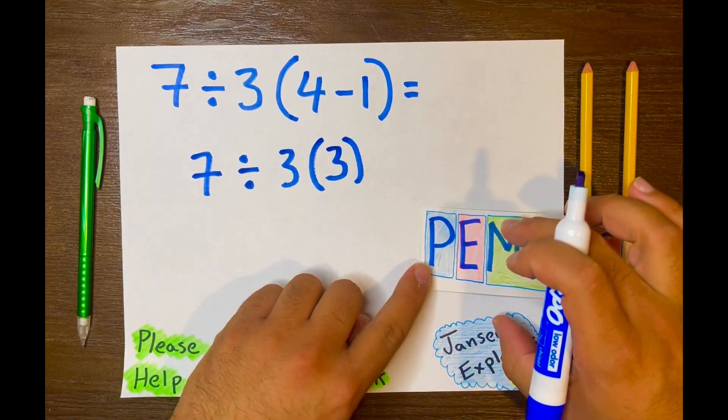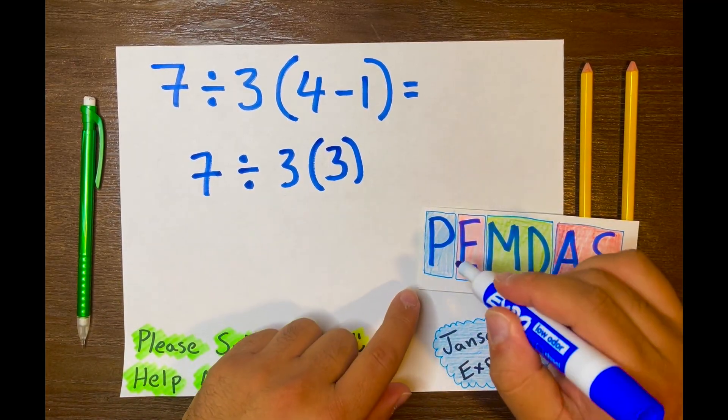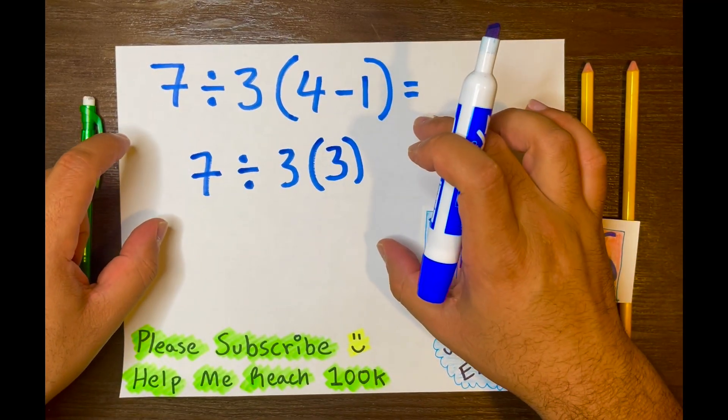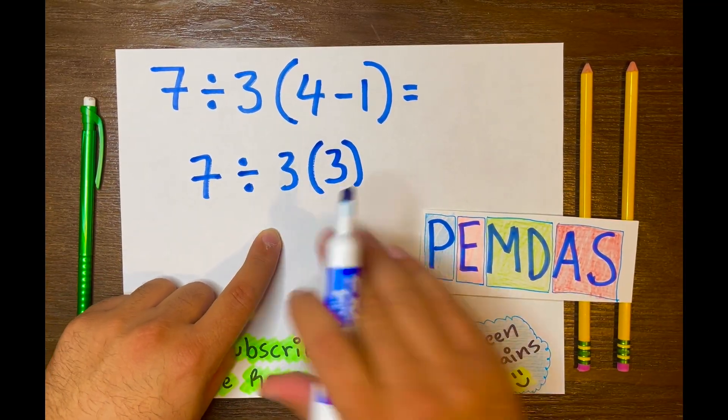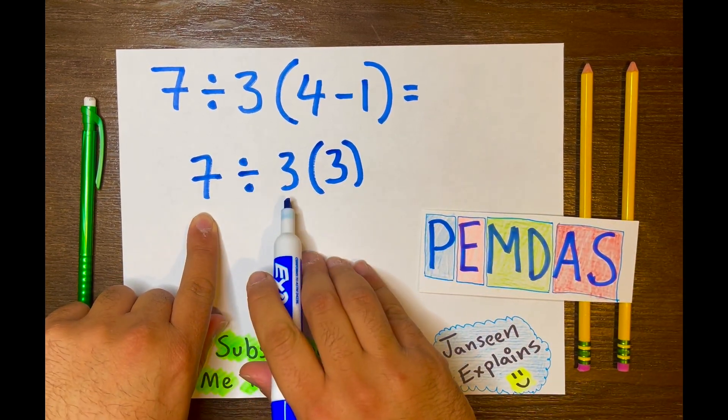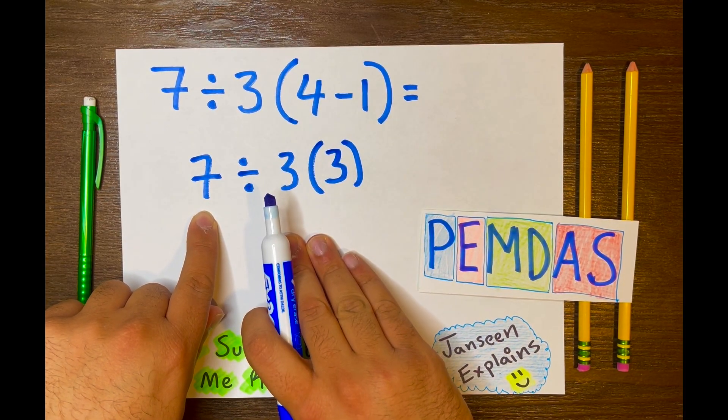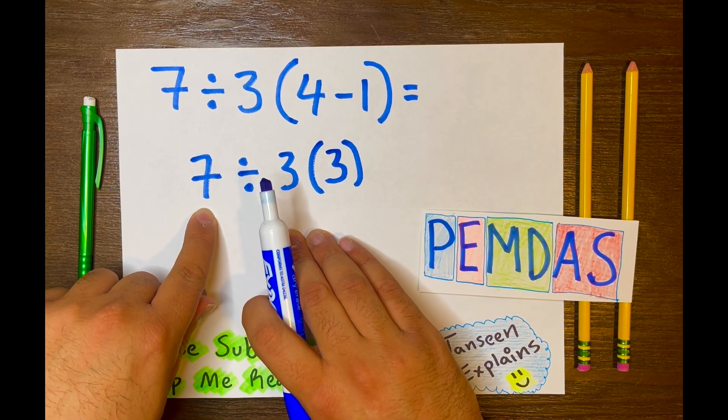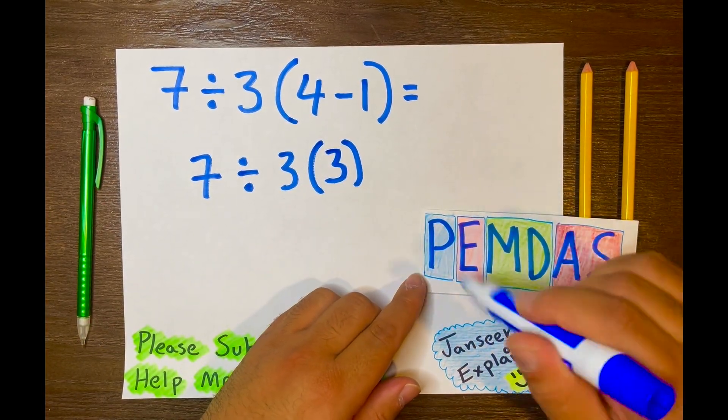Now let's look at PAMDAS, and again you are using PAMDAS to help you solve this math problem and we are solving the problem from left to right when using PAMDAS. Now 7 divided by 3 will not go first, right? Or wrong. It goes first because you are reading from left to right according to PAMDAS.